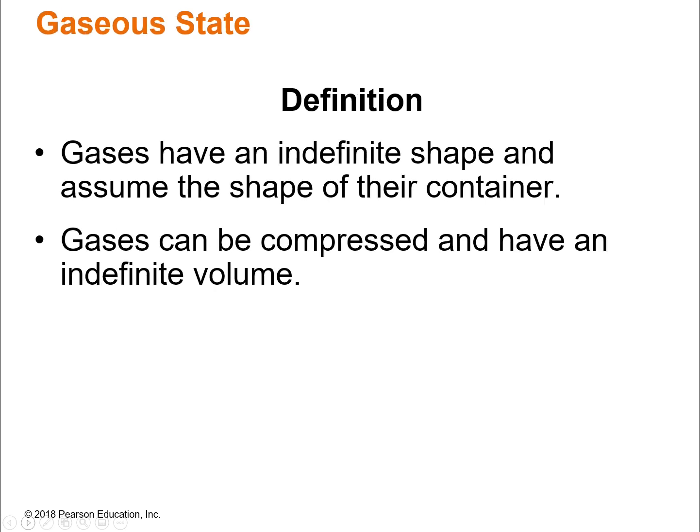And finally, the gaseous state. Gases have an indefinite shape, just like liquids — they assume the shape of their container. But gases can be compressed, and they have an indefinite volume. You can take one volume of gas and compress it down, and then you can relieve that pressure and the gas will expand to fill whatever space is available. So the volume of a gas is indefinite — it will change along with the shape of the container.